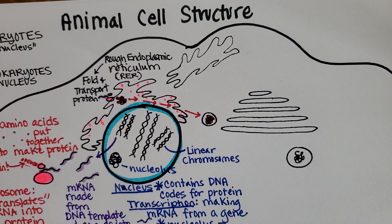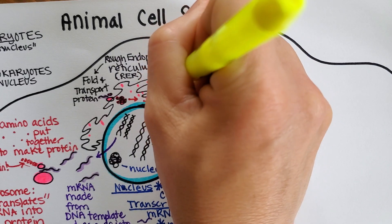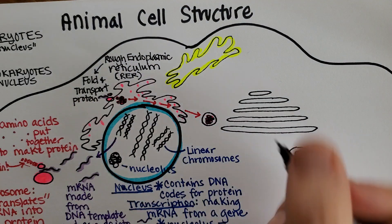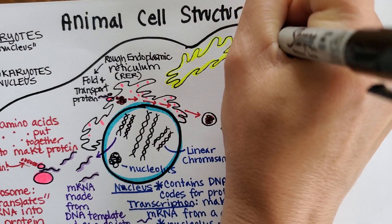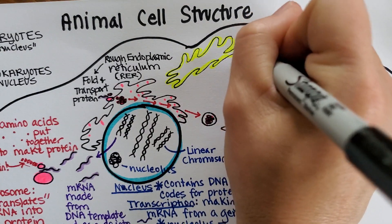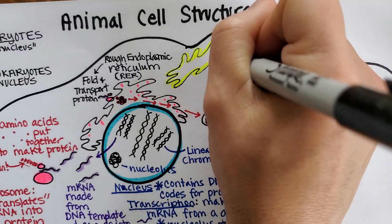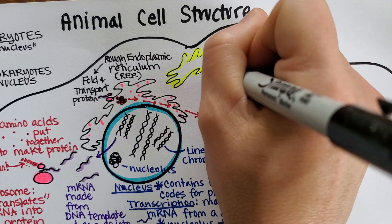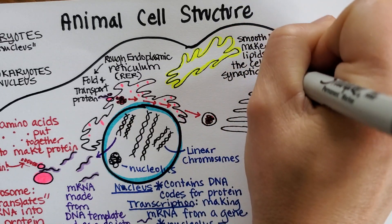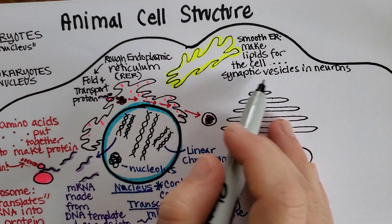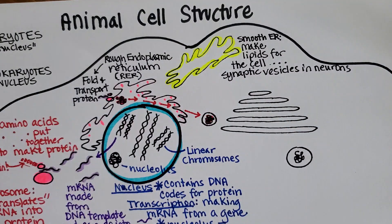Now notice over here we have something that looks kind of like the ER, but this is called the smooth ER because it doesn't have those ribosomes on it. What the smooth ER typically does is make lipids — like phospholipids for the cell, which are fats or oils. It's also very involved with synaptic vesicles, which are made of lipids in neurons. These could extend all the way down to the end of an axon, for example.